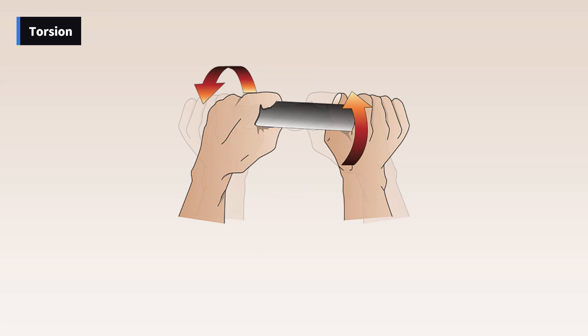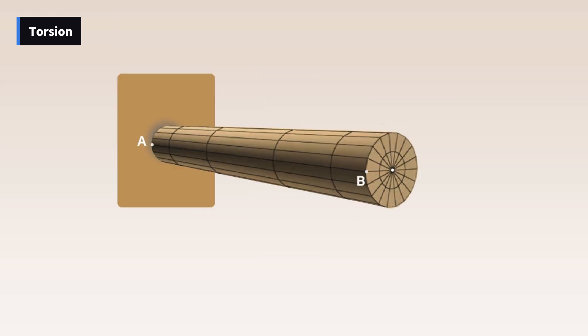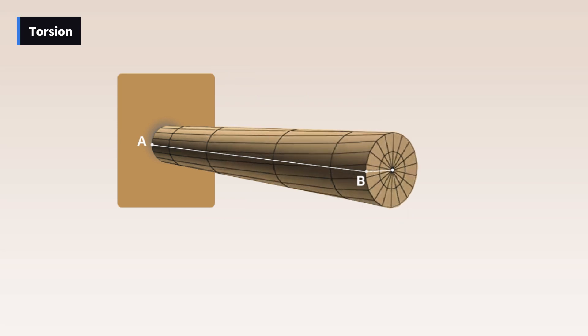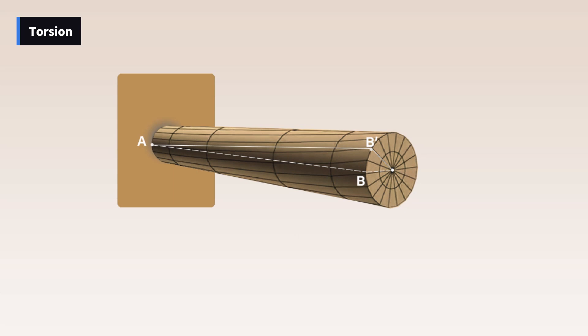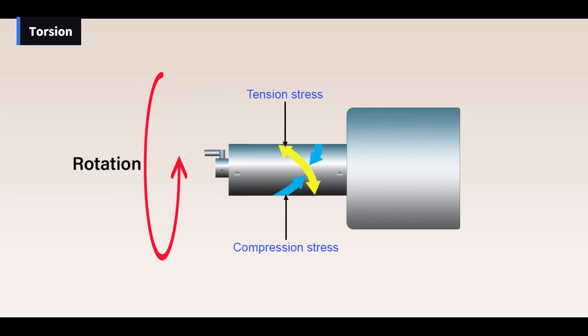Torsion is the stress an object experiences when it is twisted, which is what happens when torque is applied to a shaft. Torsion is made up of two other stresses, tension and compression. When a shaft is twisted, tension is experienced at a diagonal to the shaft and compression acts 90 degrees to the tension.